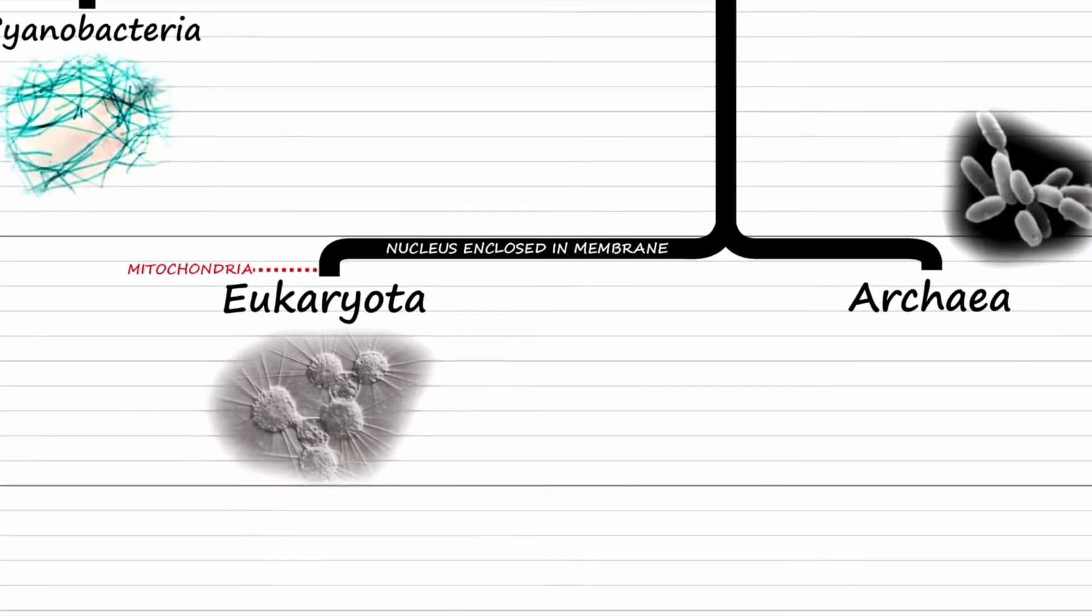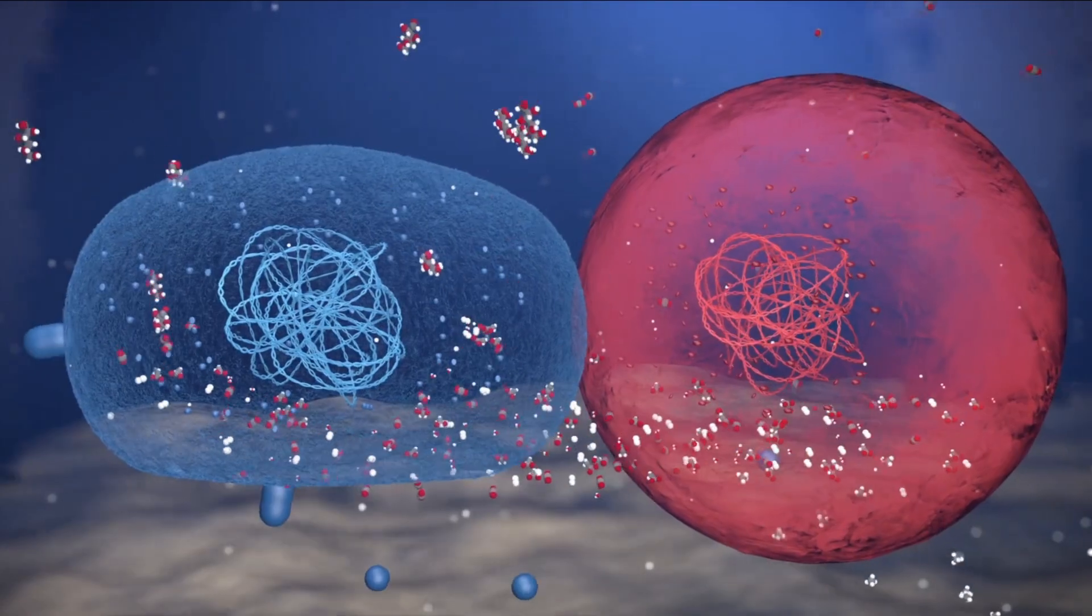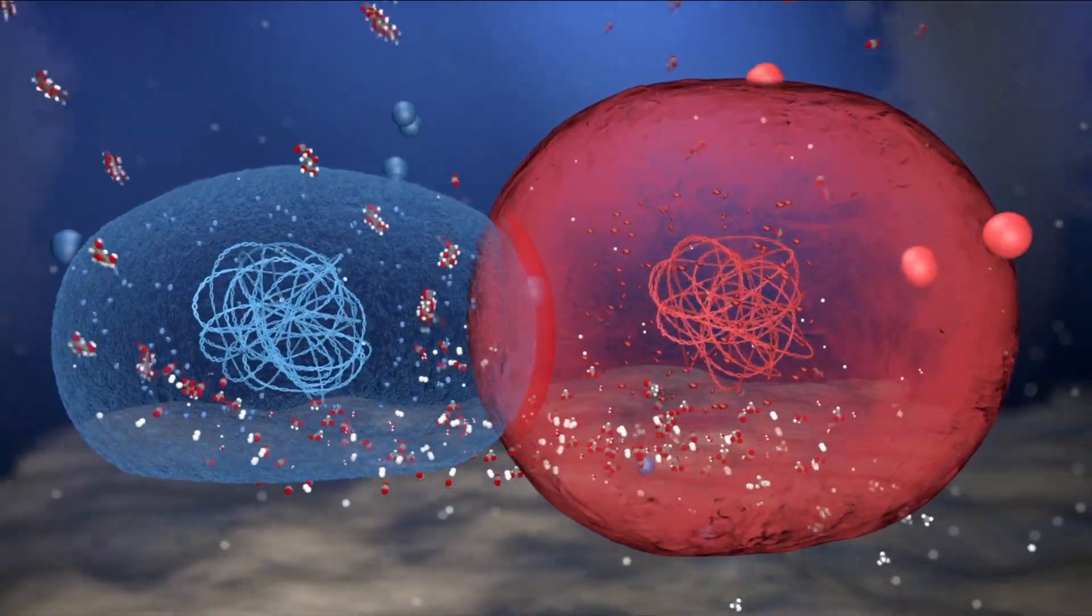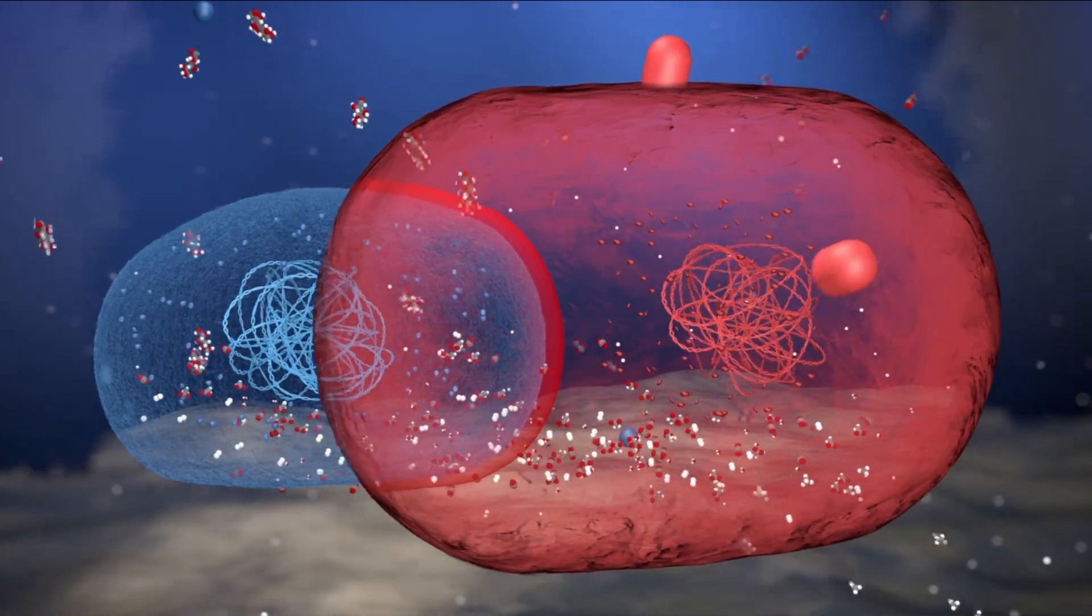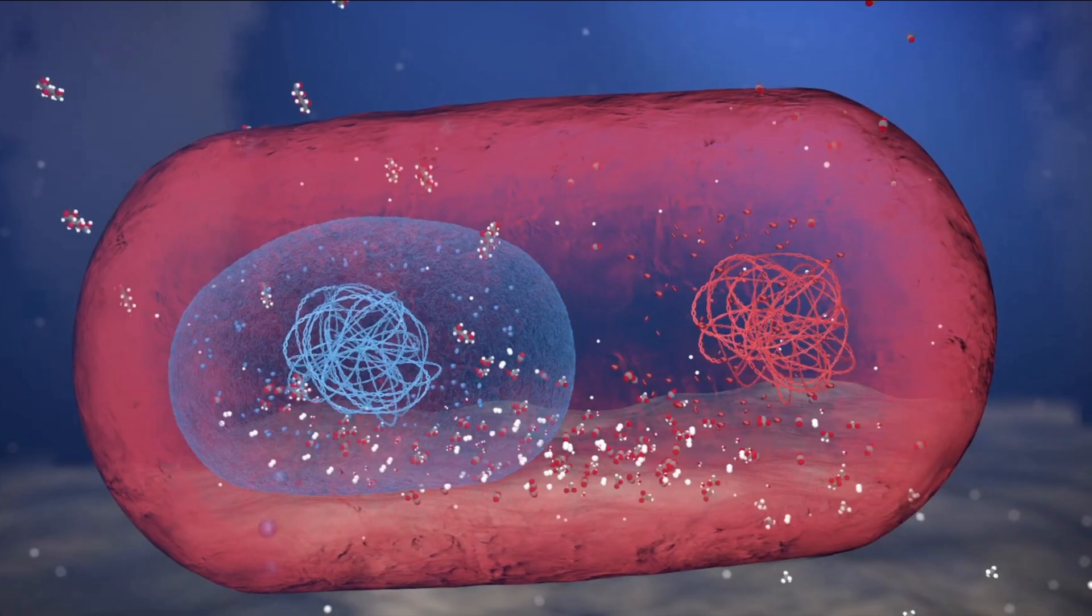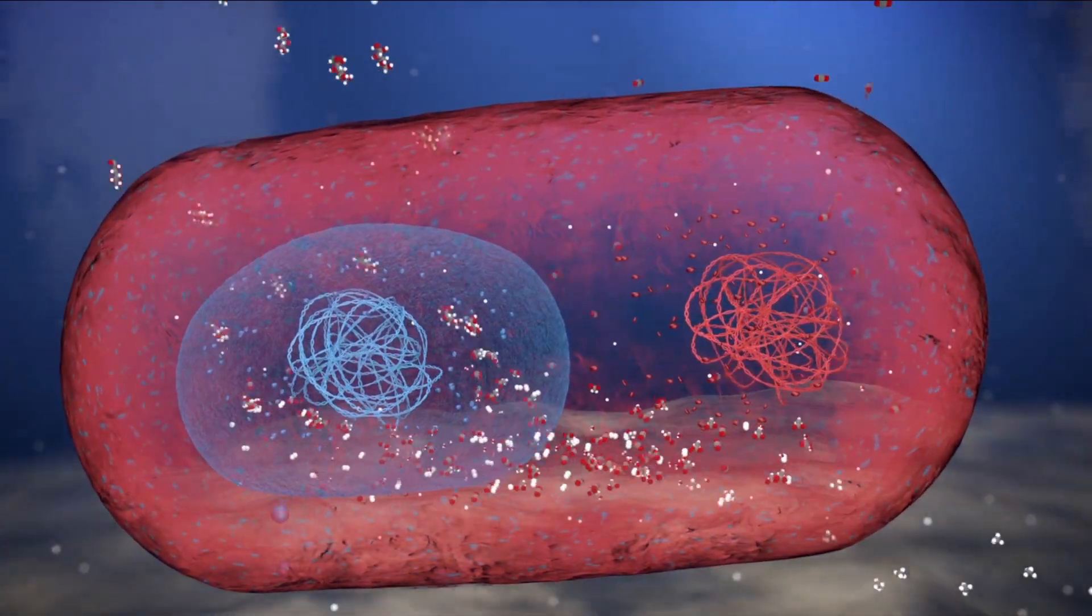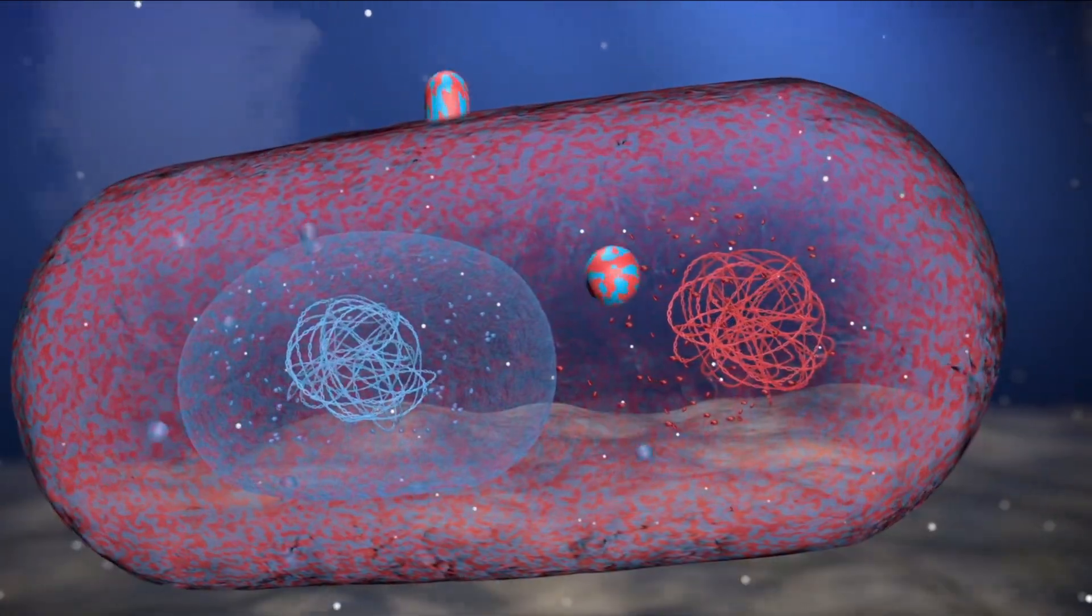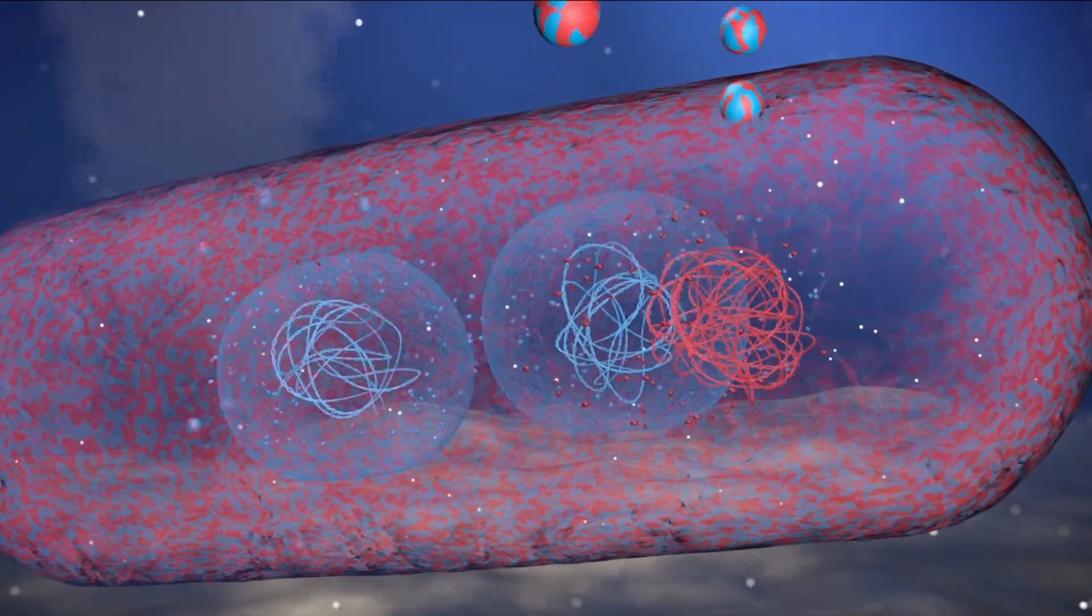The development of the first eukaryotes, or eukaryogenesis, likely occurred when a bacterium engulfed an archaea, but then instead of digesting it, the two organisms formed a symbiotic relationship. This then allowed the archaea to start producing energy for the bacterium, which in turn allowed for the evolution of much greater cellular complexity.